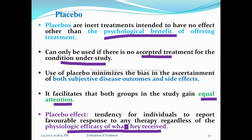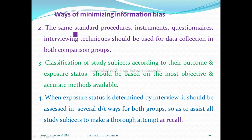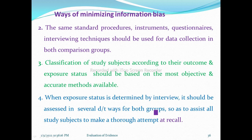Other ways to minimize information bias include: using the same standard procedures, instruments, and interviewing techniques for data collection in both comparison groups. Classification of study subjects according to their exposure or outcome status should be based on the most objective and accurate methods available. When exposure status is determined by interview, it should be assessed in several different ways for both groups to assist recall.